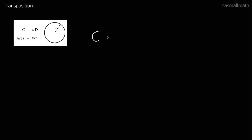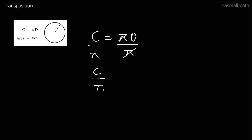So we'll make d the subject of the equation. We've got C equals pi d. Pi is multiplying d, so if we divide both sides by pi, that keeps the equation balanced and the pi's cancel. So we're left with C over pi equals d. So d is now the subject of this equation. That's the basic method — what you do to one side you must do to the other, and you try to eliminate things from one side so you end up with the thing you want on its own.